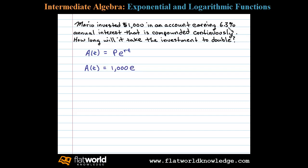e to the rt power, r written as a decimal is 0.063 times t. So this function models the investment, gives the amount at the end of t years. Now the question is, how long will it take the investment to double? So if we start with one thousand dollars, in the end we'll have two thousand dollars.